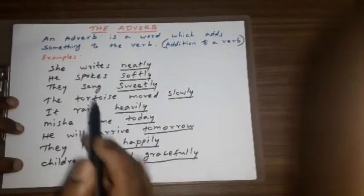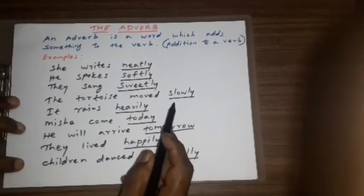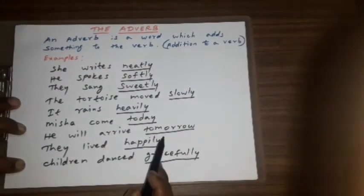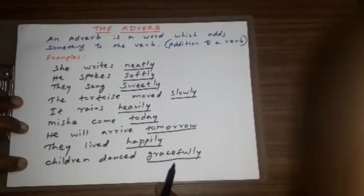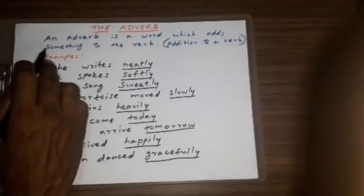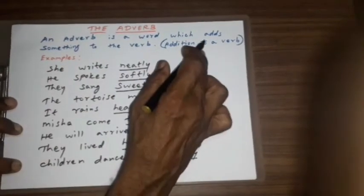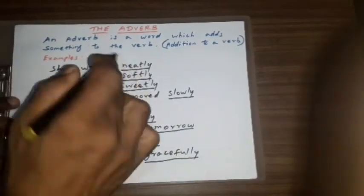We say adverbs like neatly, softly, sweetly, slowly, heavily, today, tomorrow, happily, gracefully. So an adverb is a word which adds something to the verb.